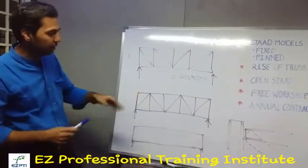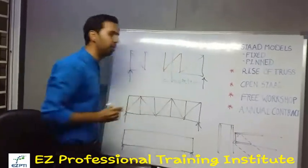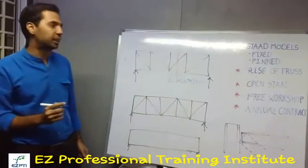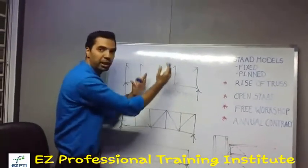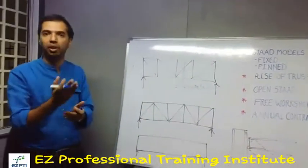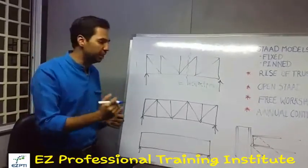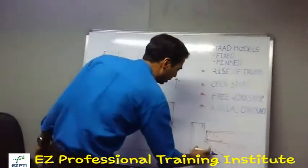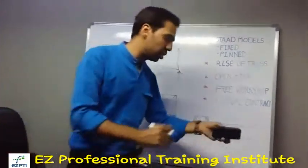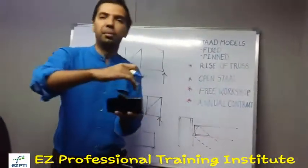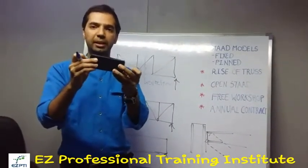To understand this clearly, you can find this direction with the method of section and you can determine with the shear force, and accordingly you can decide whether it is in tension or compression. More convincingly, you can take an example of this column and beam. When any beam is loaded in the middle, it has a tendency to rotate like this.